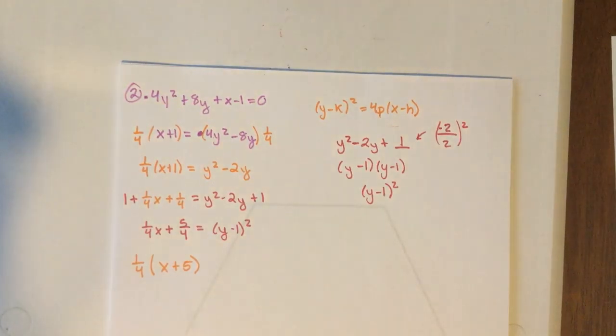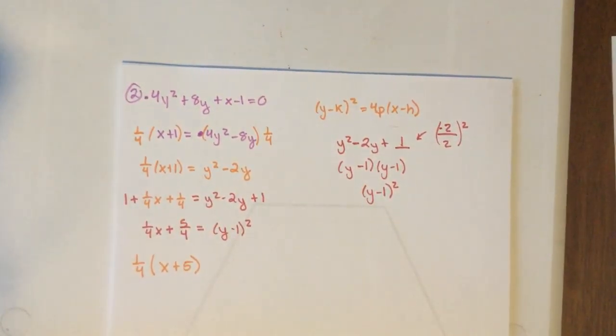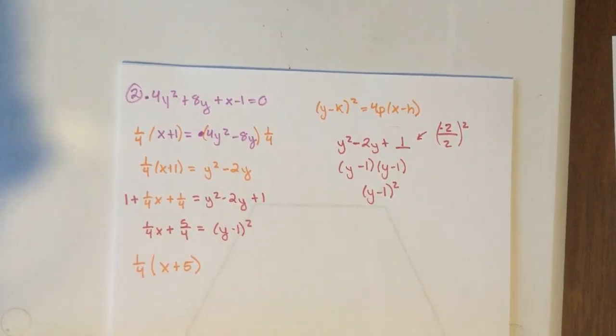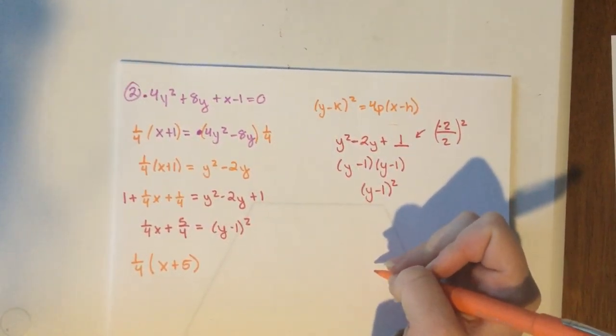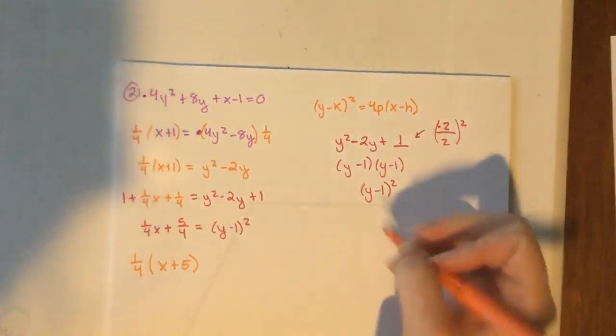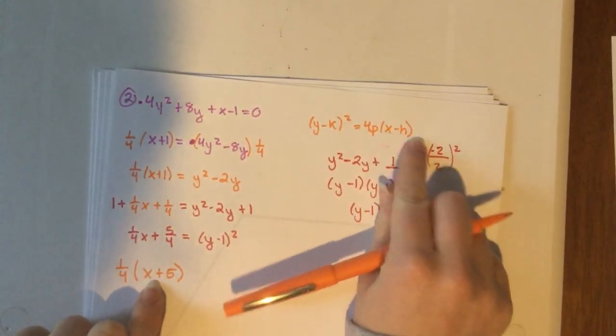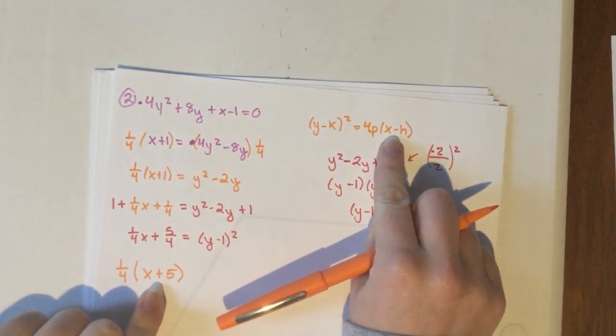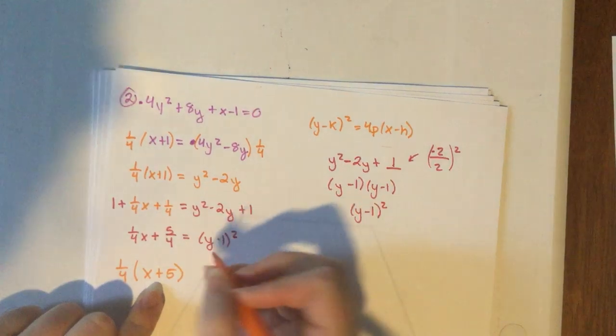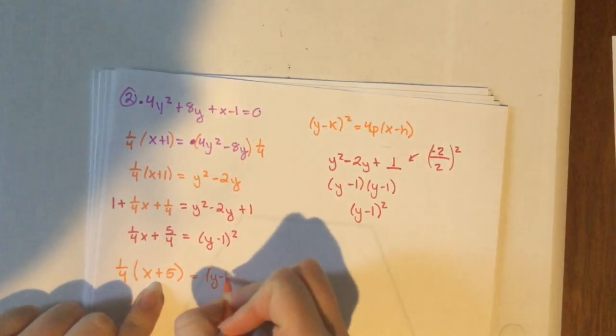And so when you have fractions and they're the same denominator, just pull it out. And if you were to distribute that back in, guess what you would get? 1 fourth x plus 5 fourths. So pull out the bottom denominator, and then you're going to be set to go. That is always going to be, when you have fractions, that's going to be your GCF. So don't sit there and try to list factors of 1 fourth and all of that. Common denominator, that's what you're pulling out. And now it looks much more like what we had with that x minus h. And we have our (y - 1)².